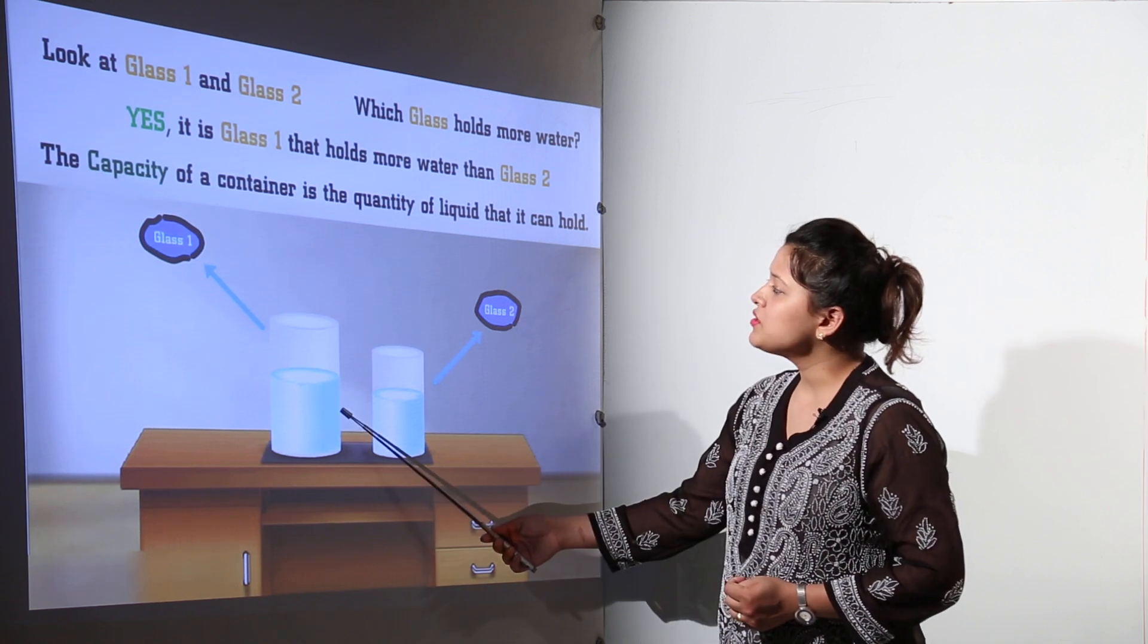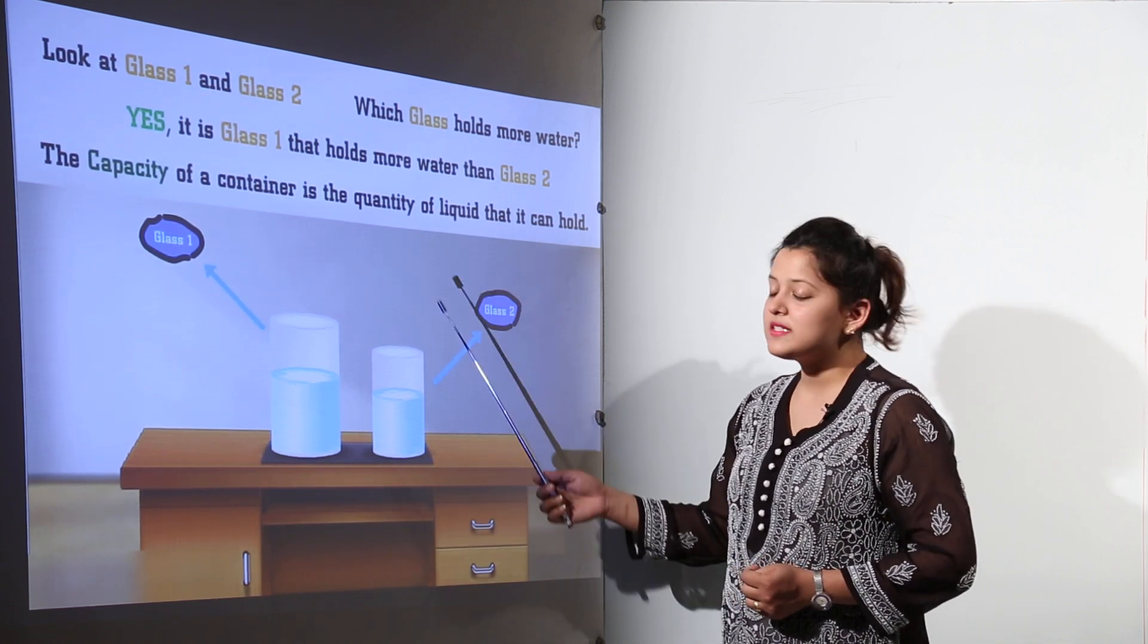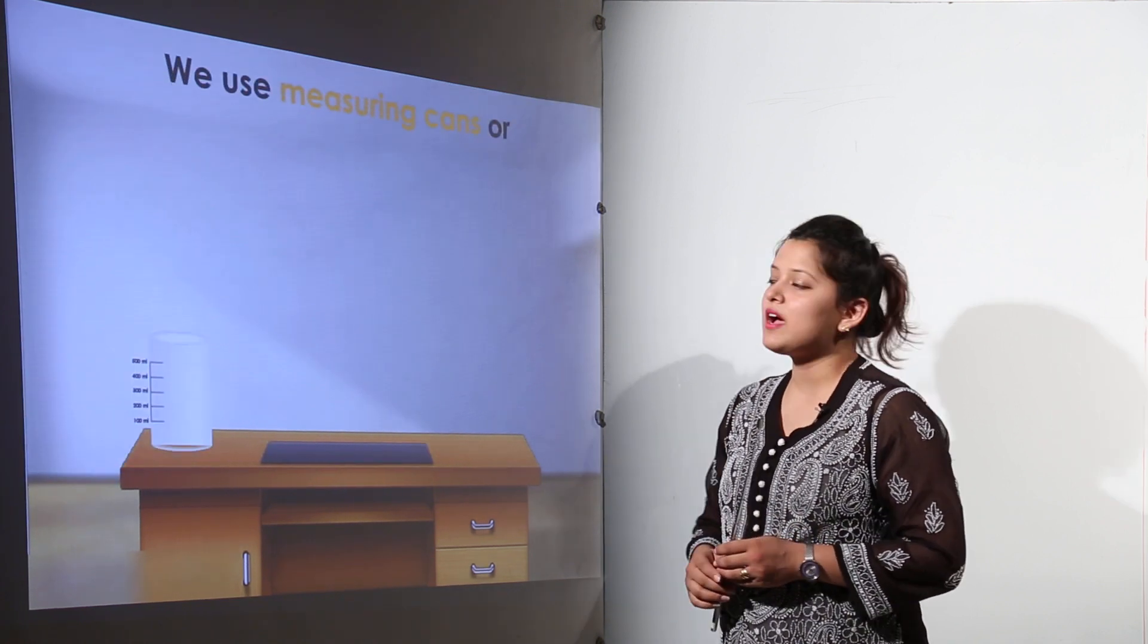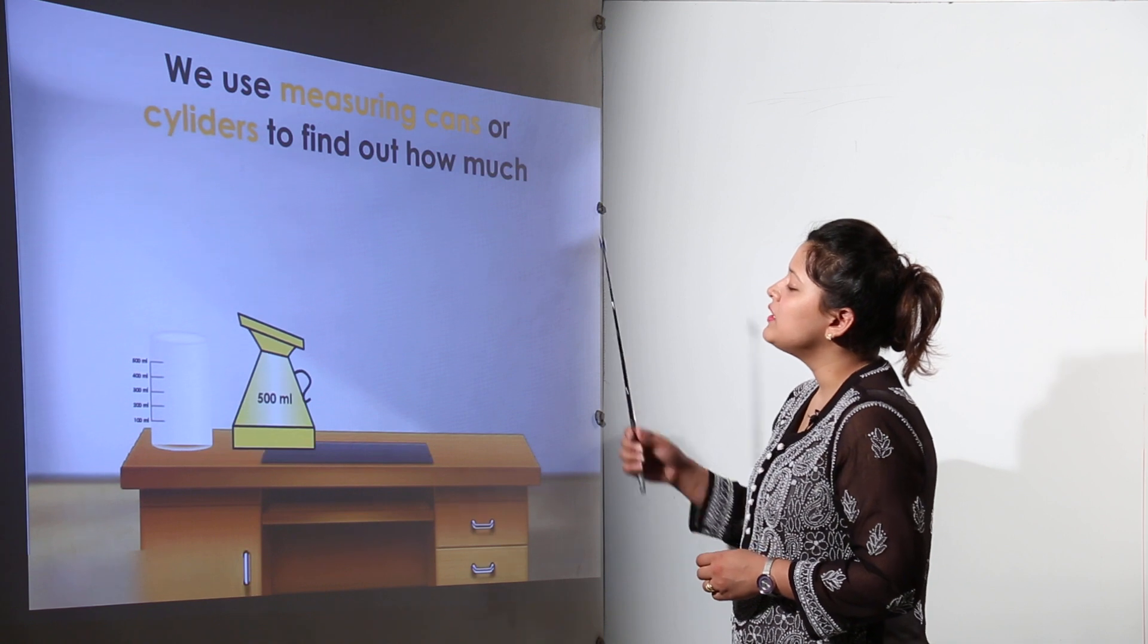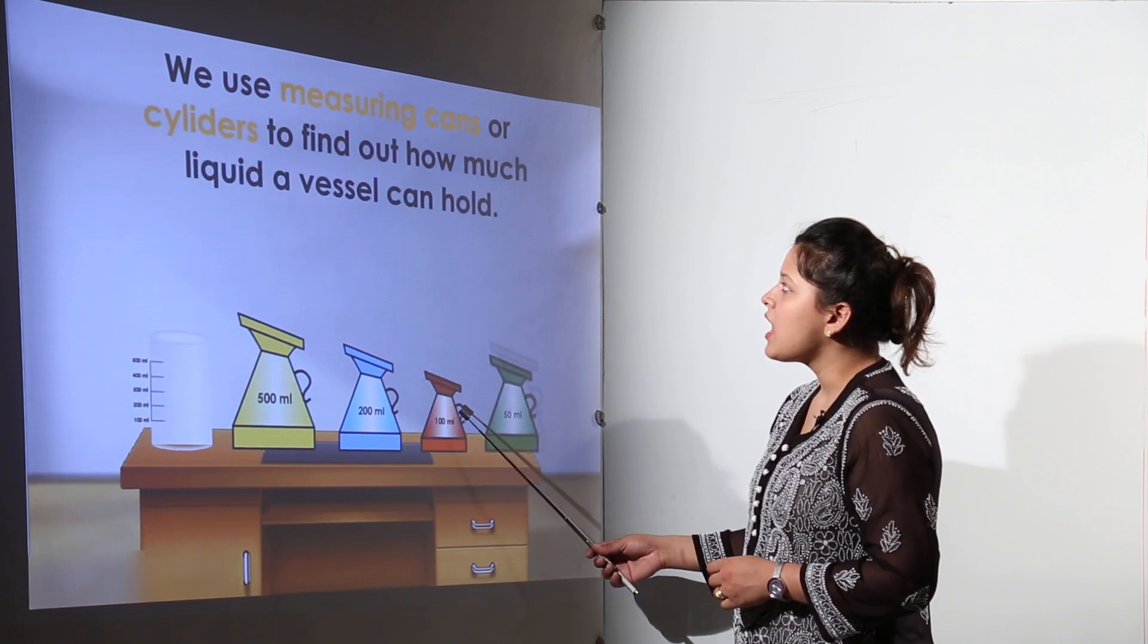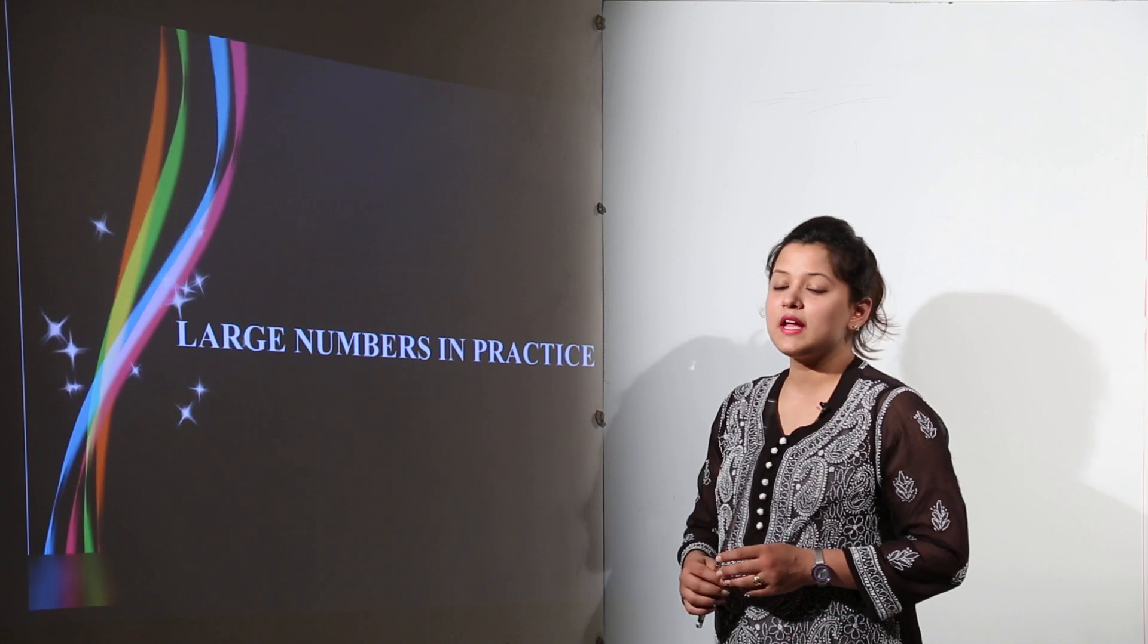So how did you identify it? That identification is done by the water holding capacity. The capacity of the container is the quantity of liquid that it can hold. The container that can hold more liquid will have the more capacity. We use meter cans or cylinders to find how much liquid a vessel can hold.